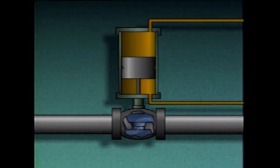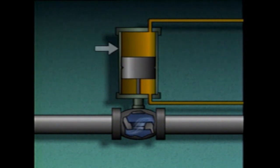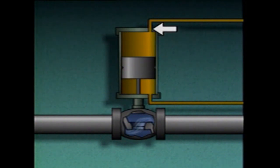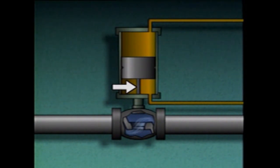A double-acting hydraulic actuator is called double-acting because it uses hydraulic fluid pressure to both open and close a valve. A double-acting hydraulic actuator consists of a cylinder, a fluid port at the base of the cylinder, a second fluid port at the top of the cylinder, a piston, and a piston rod which is connected to the valve disk.